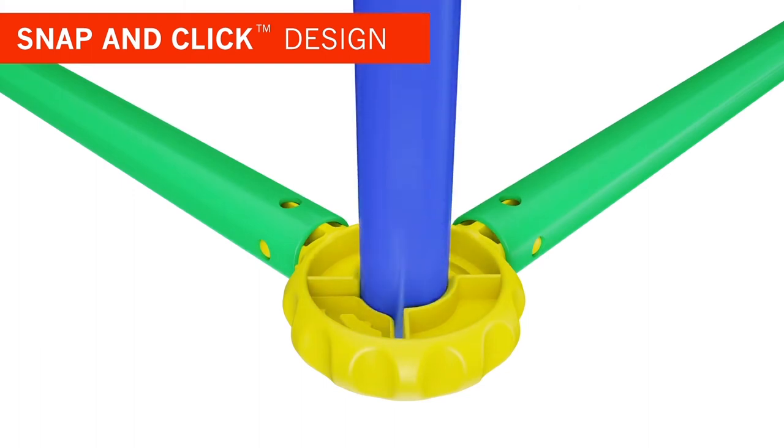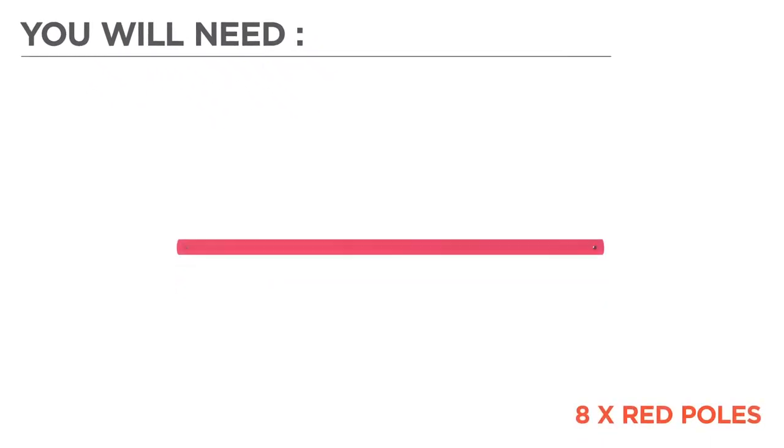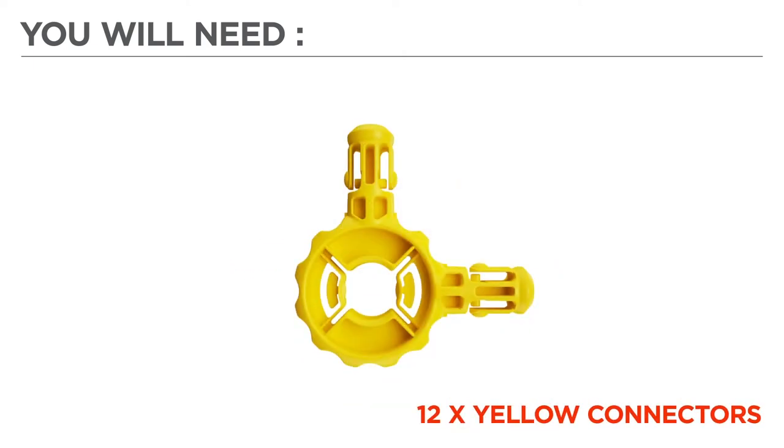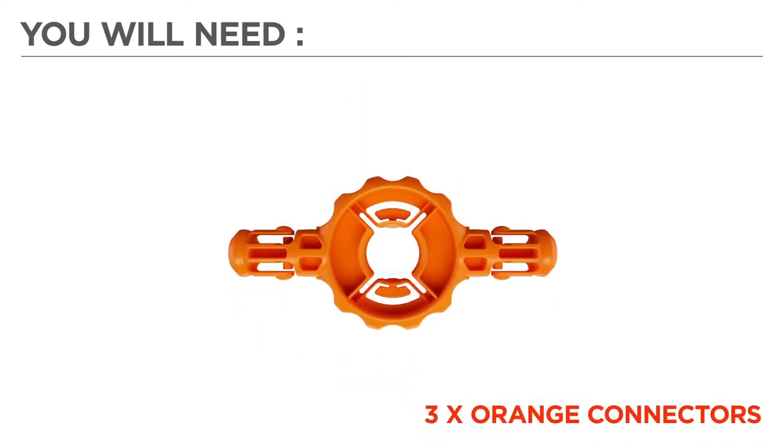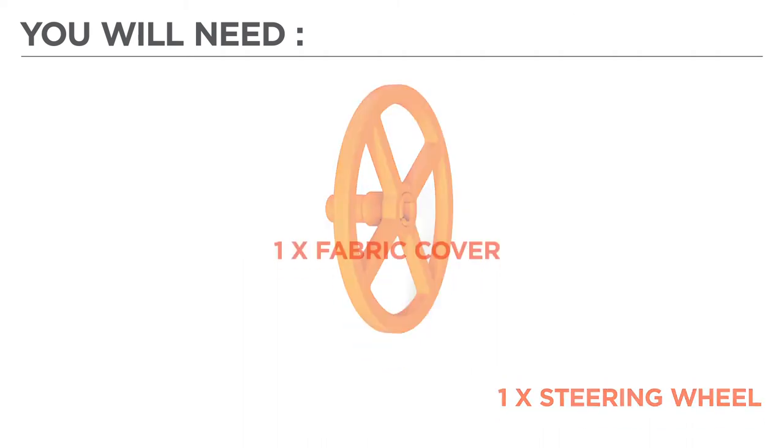Now before we begin, let's gather the color-coded parts needed for your build. 8 red poles, 24 navy poles, 8 magenta poles, 2 teal poles, 6 pink connectors, 12 yellow connectors, 8 blue connectors, 3 orange connectors, 1 steering wheel, and 1 fabric cover.